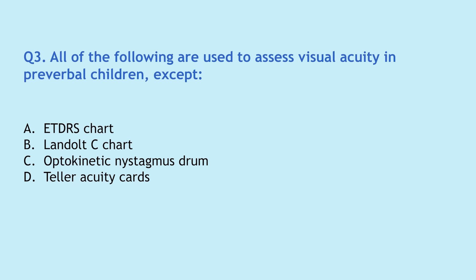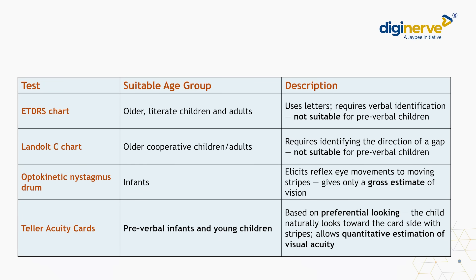The third question was an except question: all of the following are used to assess visual acuity in pre-verbal children except — ETDRS chart, Landolt C chart, optokinetic nystagmus drum, and Teller acuity cards. The ETDRS chart is suitable for older individuals, literate children and adults; it uses letters and requires verbal identification, therefore it is not suitable for pre-verbal children. The Landolt C chart is also used for older cooperative children or adults and requires identifying the direction of the gap in the C, therefore it is not suitable for pre-verbal children.